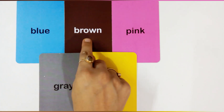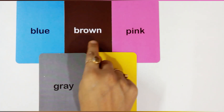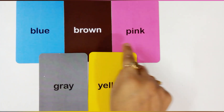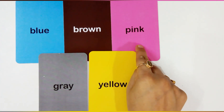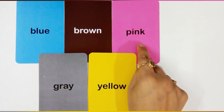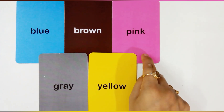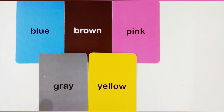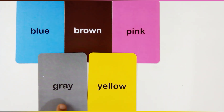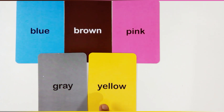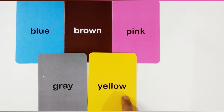B for brown. B-R-O-W-N, brown. This is brown color. This is pink color. P-I-N-K, pink. P for pink. This is pink color. G for gray. G-R-A-Y, gray. This is gray color. Y for yellow. Y-E-L-L-O-W. This is yellow color.